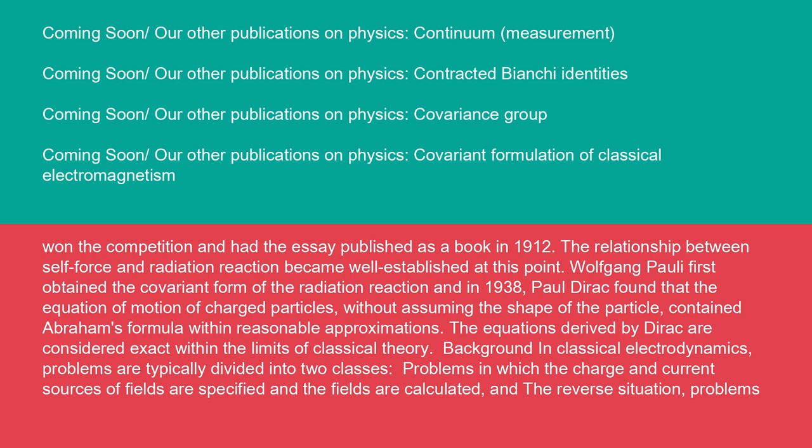The relationship between self-force and radiation reaction became well-established at this point. Wolfgang Pauli first obtained the covariant form of the radiation reaction, and in 1938, Paul Dirac found that the equation of motion of charged particles, without assuming the shape of the particle, contained Abraham's formula within reasonable approximations. The equations derived by Dirac are considered exact within the limits of classical theory.